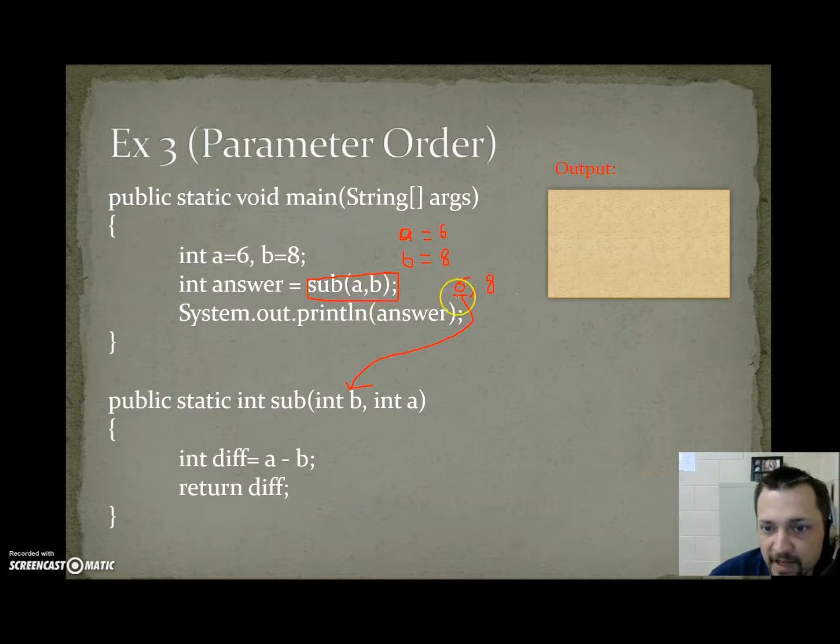But notice, the value of a is being sent, which is 6, and it's going to be stored in a variable called b. So b is 6, and a is 8. So when we do a minus b, our difference is going to be 2, not a negative 2, like in our last example.